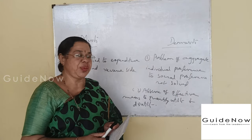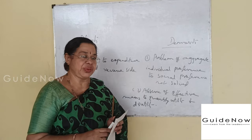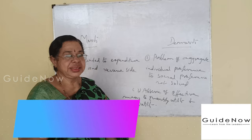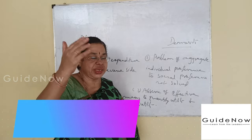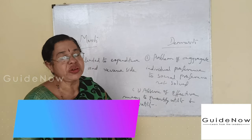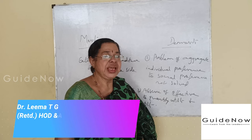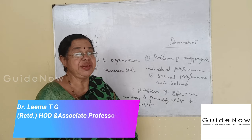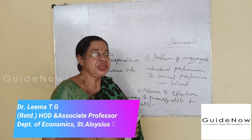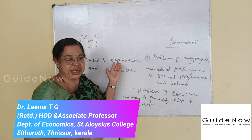We now move to the last part of the theory — the marginal utility approach, as explained by Professor A.C. Pigou. There are two important concepts here: first, what are the merits or usefulness of this theory, and second, what are the demerits or problems with the marginal utility approach?